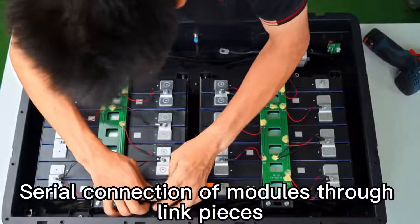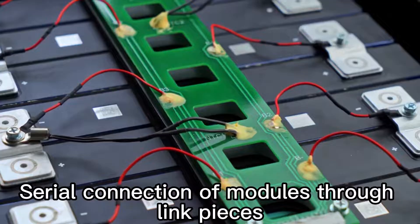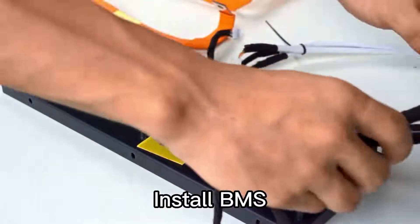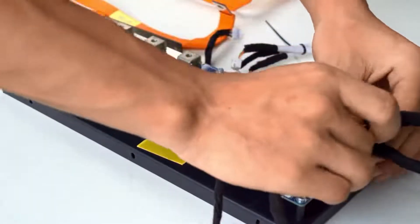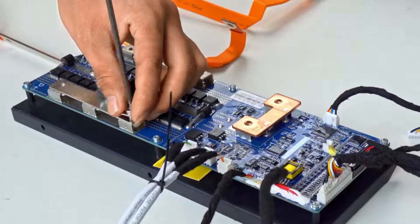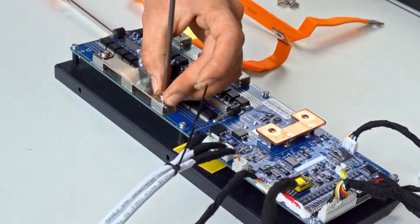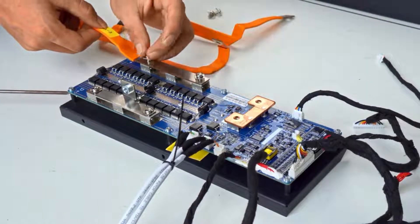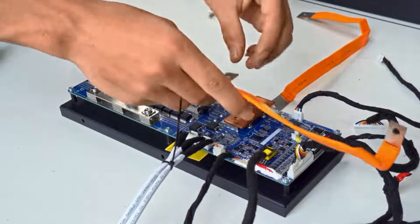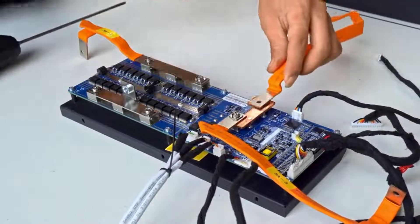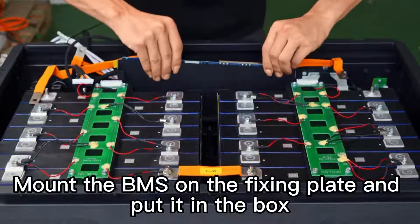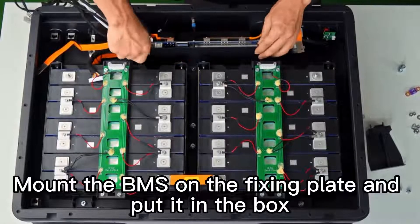Serial connection of modules through link pieces. Install BMS. Mount the BMS on the fixing plate and put it in the box.